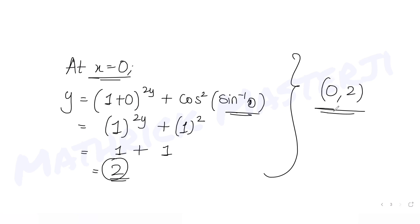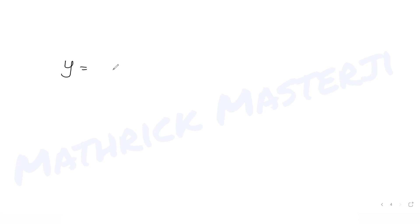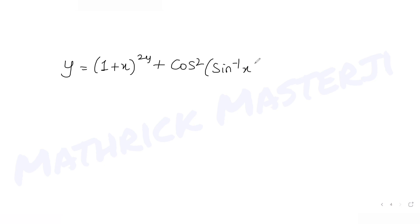So you get y equals 2. The equation of the normal has to be found at the coordinate (0, 2). Once I have that coordinate, I can use the idea of finding the slope of the tangent and then use perpendicular slopes to get the slope of the normal. So first, let's find the slope of the tangent. y is given as (1 + x)^(2y) + cos²(sin⁻¹x).